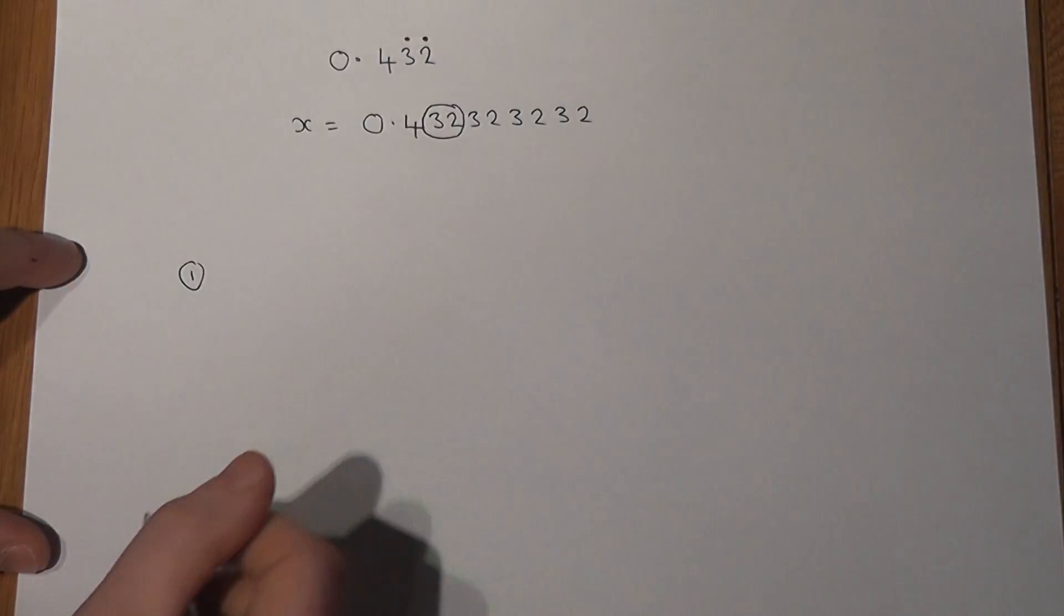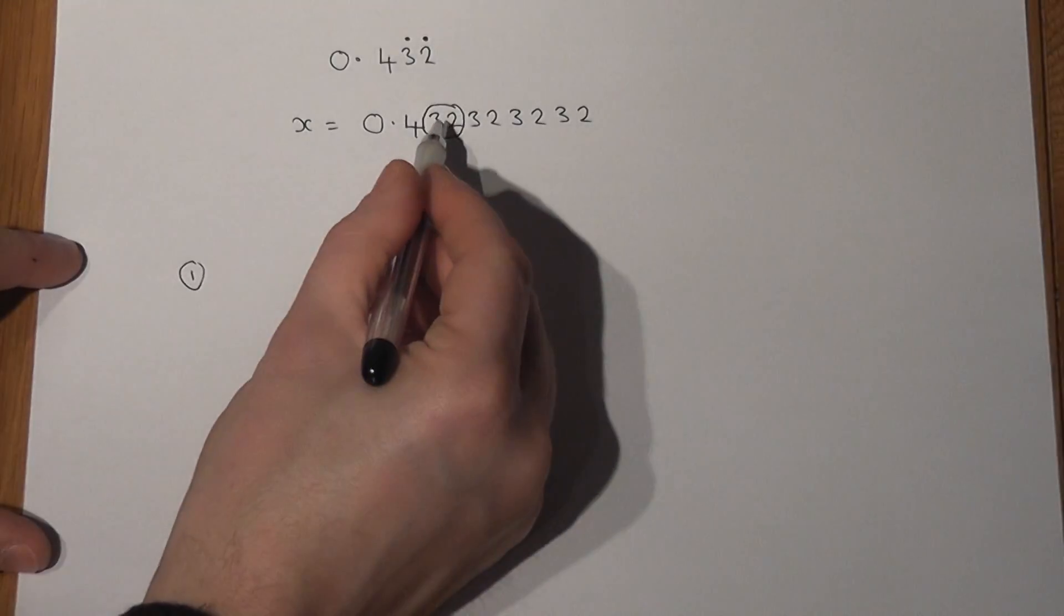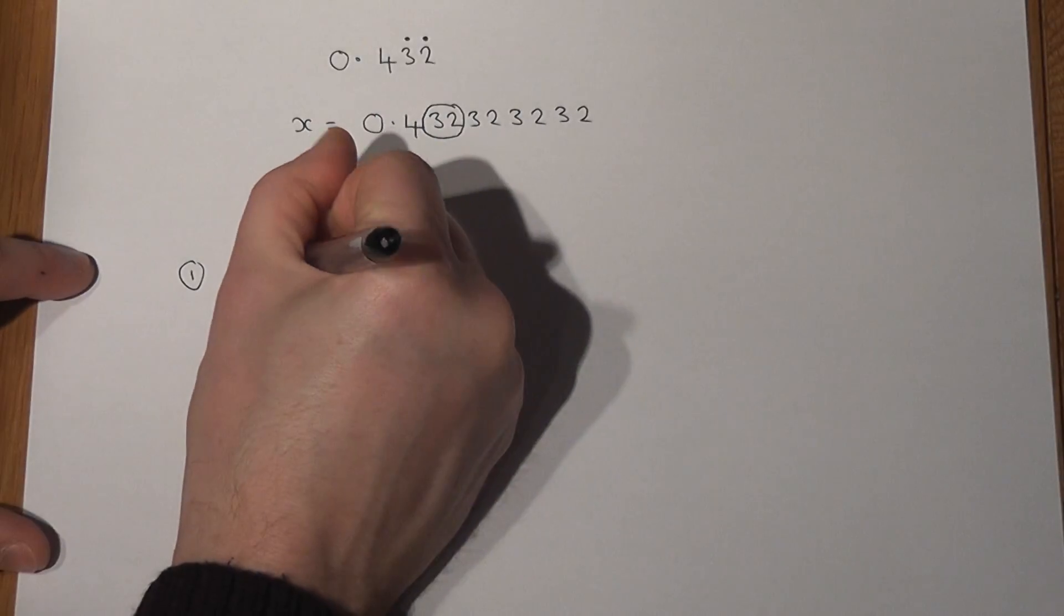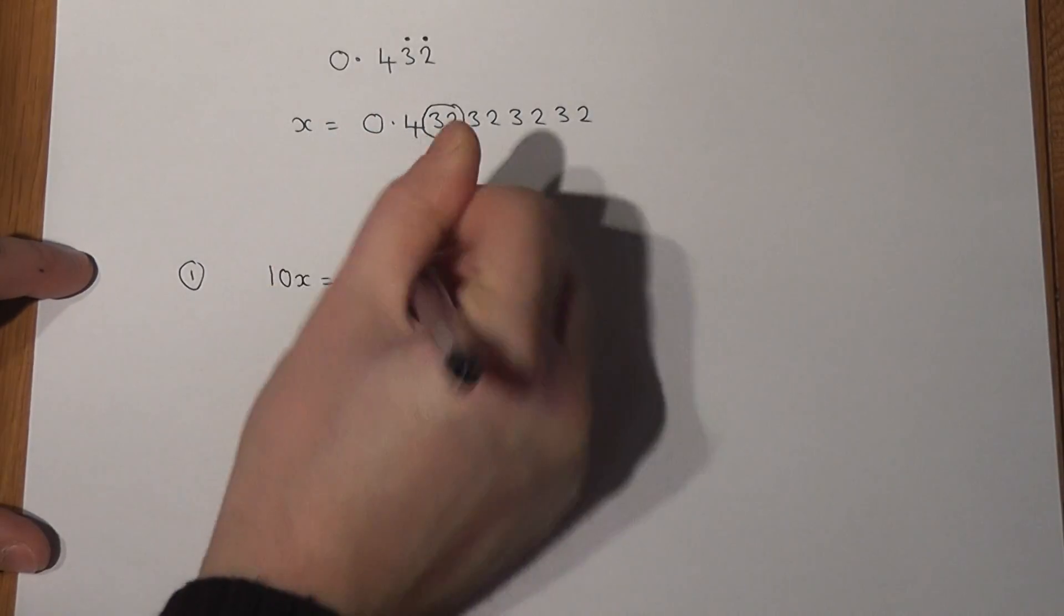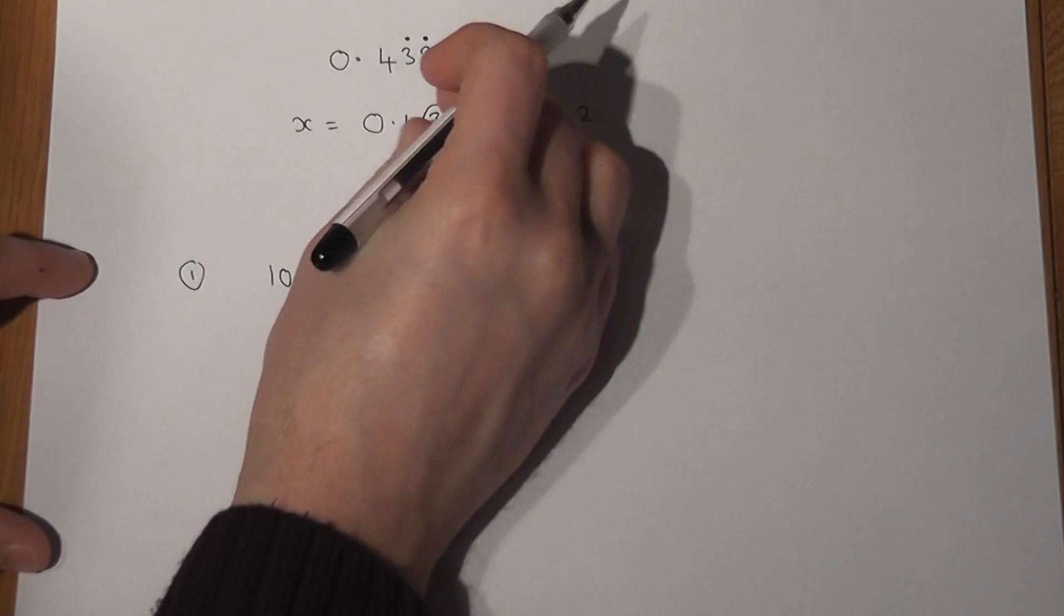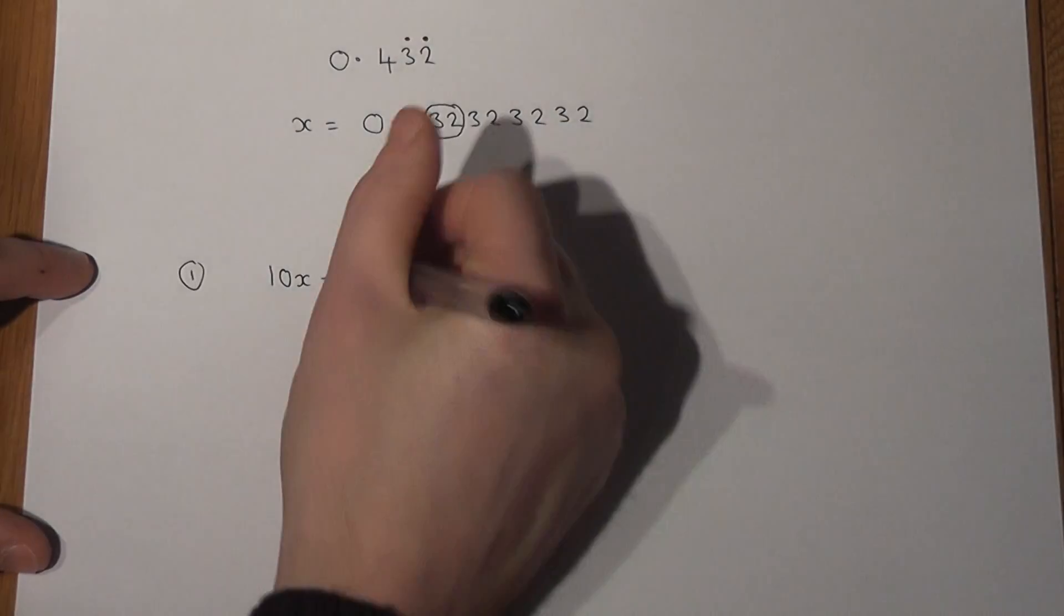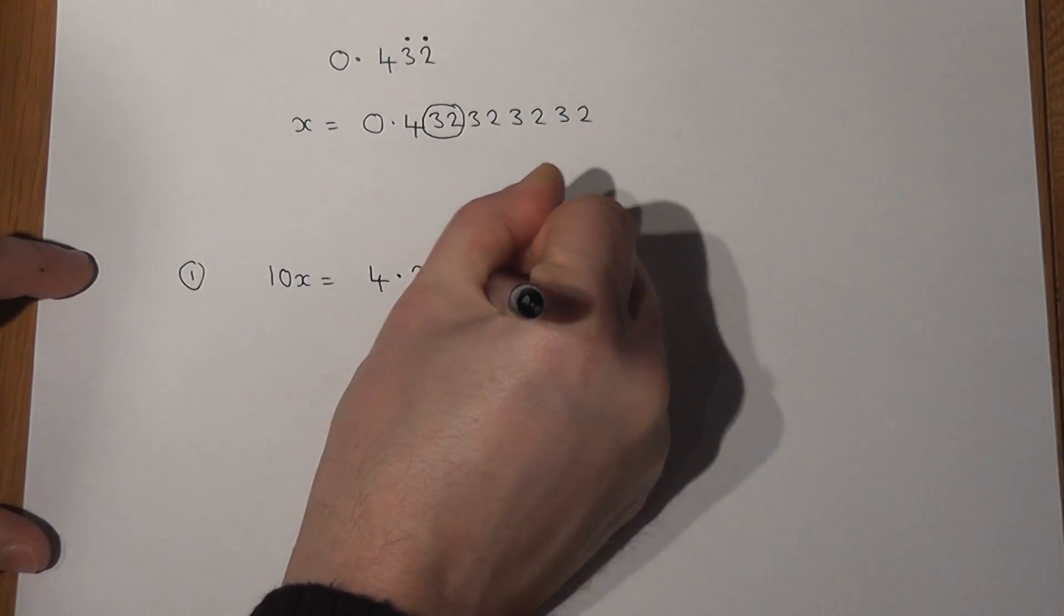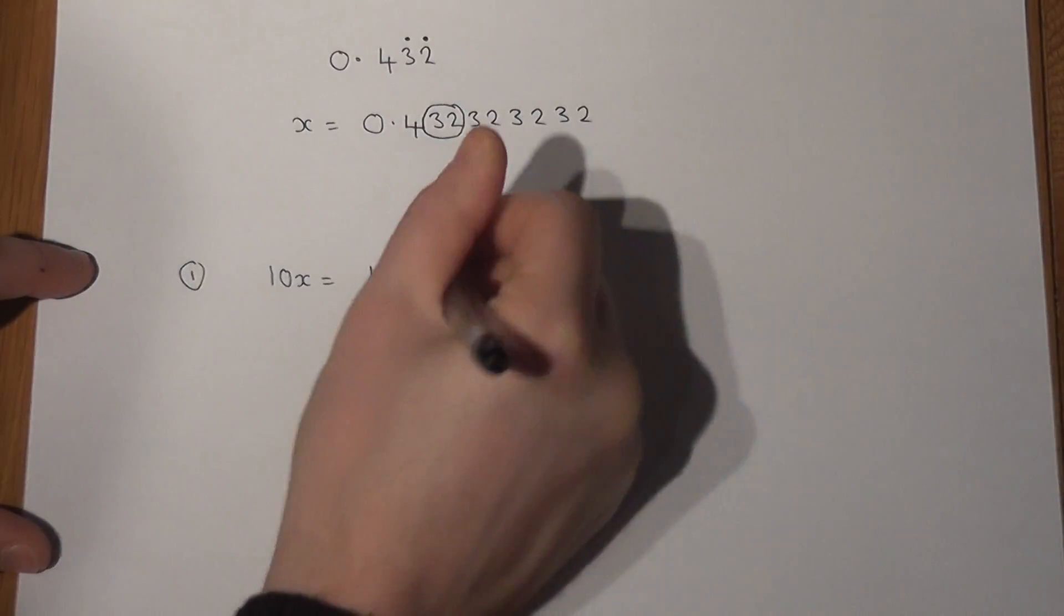And I said that step one is to times by enough tens to get the circle just next to the point. Well this is still just 10X, because the 4 shifts along as will the circle bit by one place. So 4.32, 3, 2, and so on and so forth.